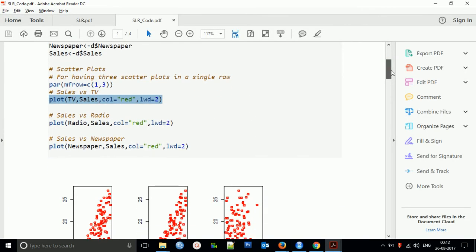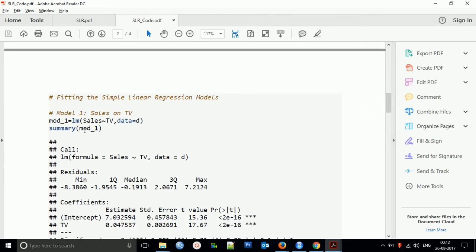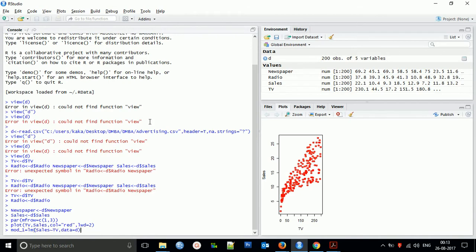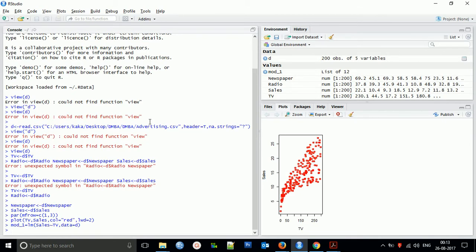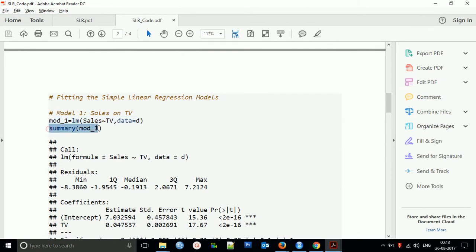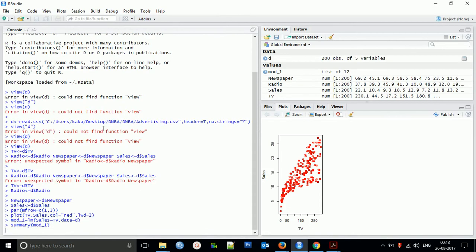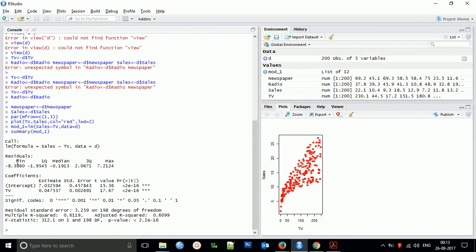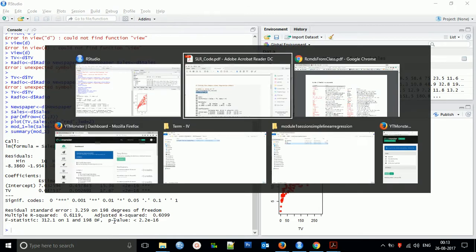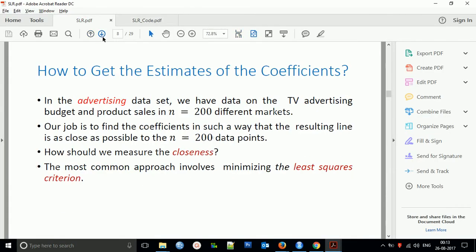Now we'll go for the linear model. We'll create the model using the lm function. When you call this, you'll find there is residuals, minimum, median. We need to understand what are the different outputs of this model.